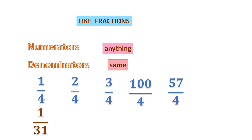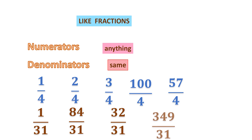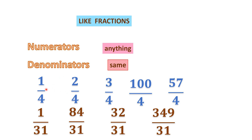Let us take some more examples: 1 over 31, 84 over 31, 32 over 31, 349 over 31. Again, what do you see in all these? The denominators are all 31. So 1, 84, 32, 349 are the numerators — different numerators. Now, 1 over 4 and 2 over 4 are like fractions to each other. They are called like fractions.